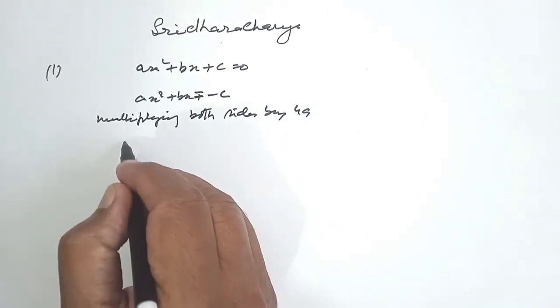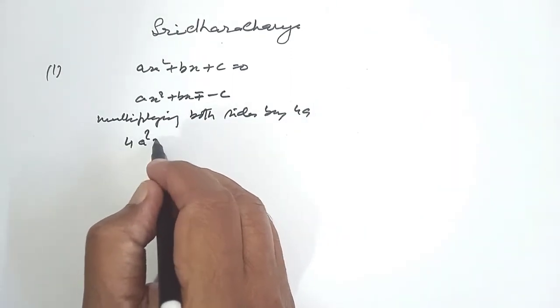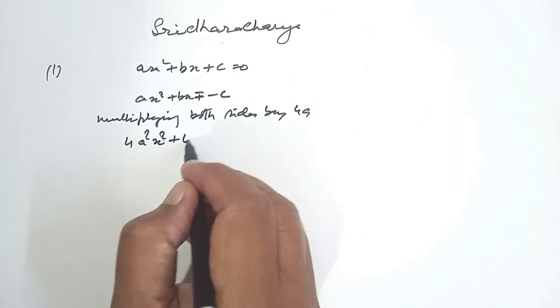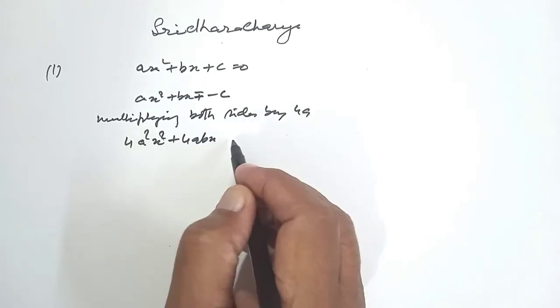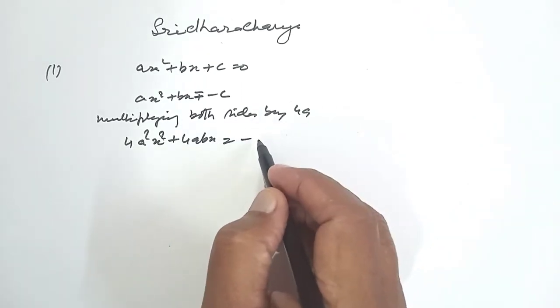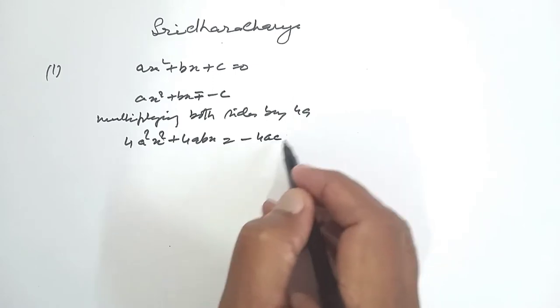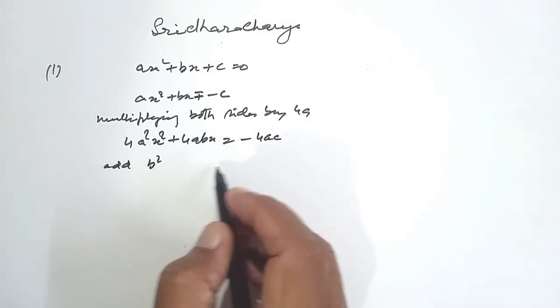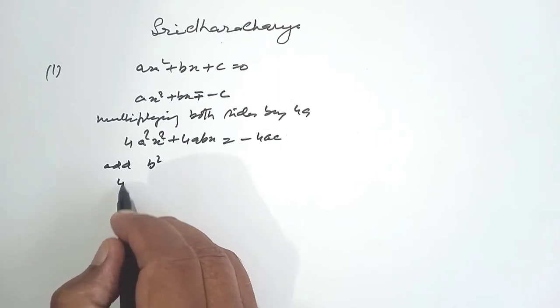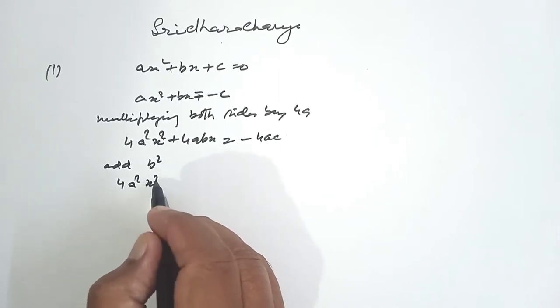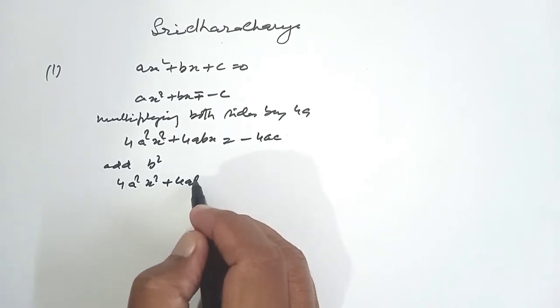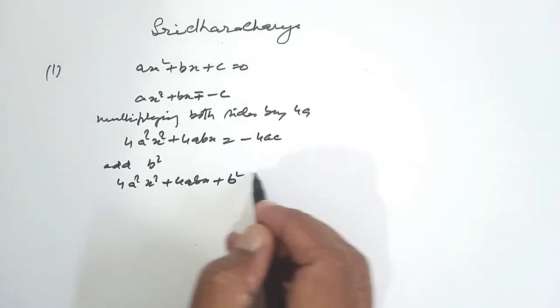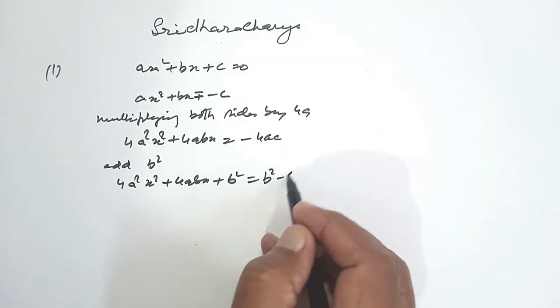we get 4a²x² + 4abx = -4ac. Now we add b² both sides. We get 4a²x² + 4abx + b² = b² - 4ac.